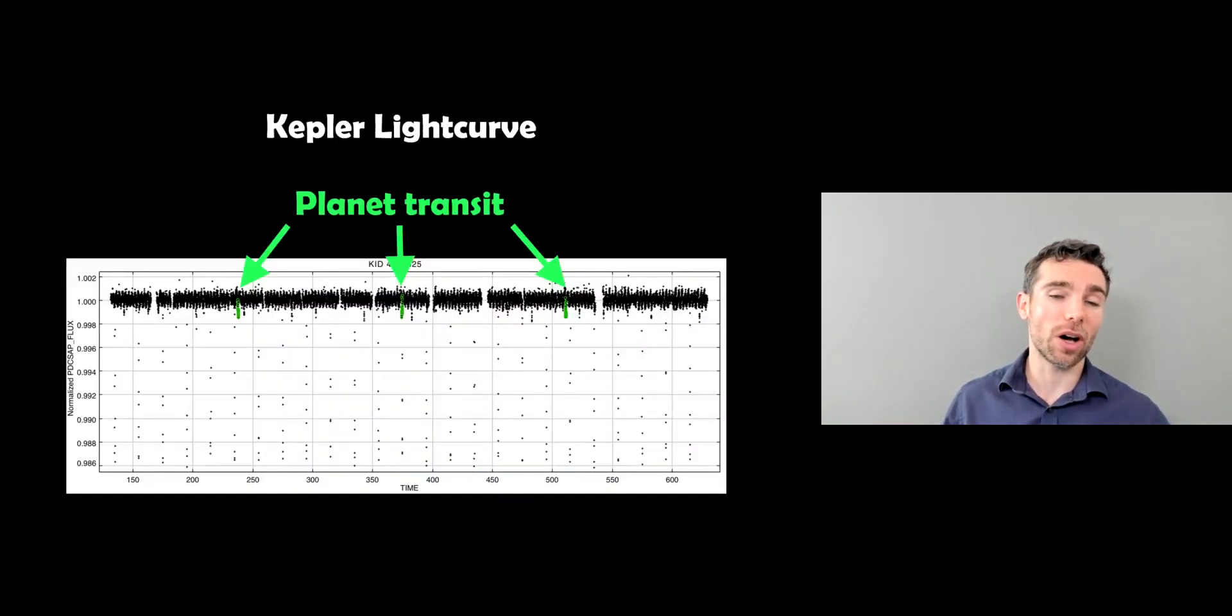Now, the actual light curve from Kepler, where it was detected, is here. And the green dips are noted as the planet transit. So those green lines there, or the dips, are not that great. But that is where this is when the planet actually passes in front of the stars.